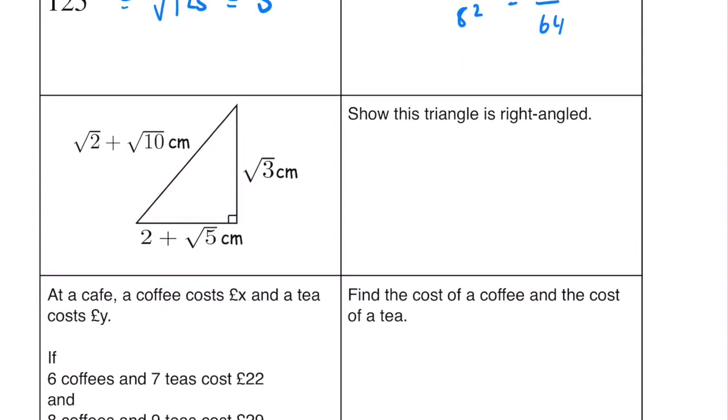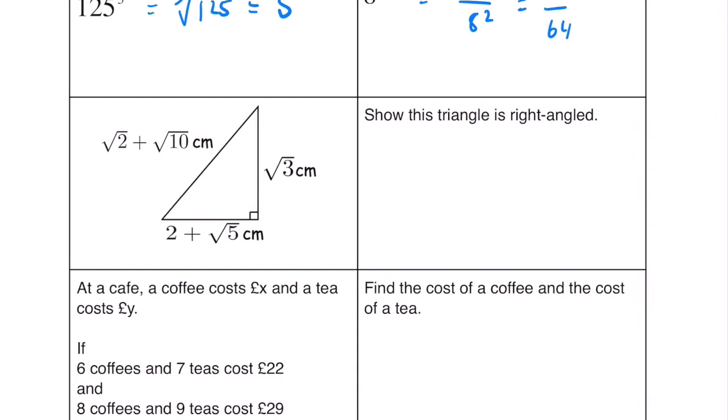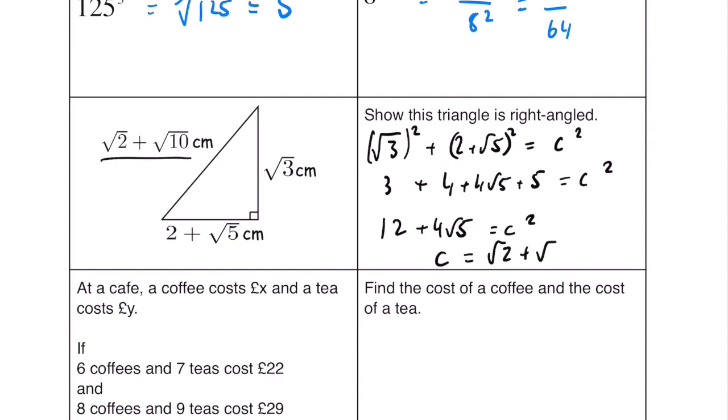Show this triangle is right angled. Now the way we want to prove any triangle is right angled is Pythagoras. So basically if we do root 3 squared add 2 plus root 5 squared our c should be this but we will solve that and find out. So root 3 squared is just 3 and then 2 plus root 5 will be 4 plus 4 root 5 plus 5 because we expand it like double brackets equals c squared. If we collect all the terms up we're going to have 12 plus 4 root 5 which is equal to c squared and if we square root that I would recommend using a calculator. Our answer is indeed root 2 plus root 10.